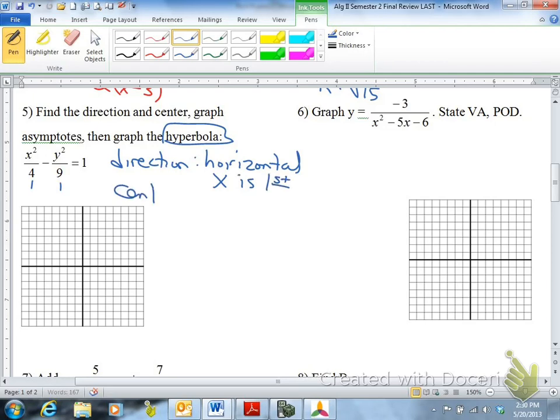On the center, in this case, is 0, 0. The h and k value with the x and the y are both 0. So the center is 0, 0. So you have 0 right here.